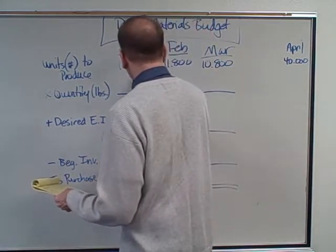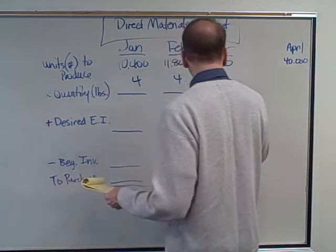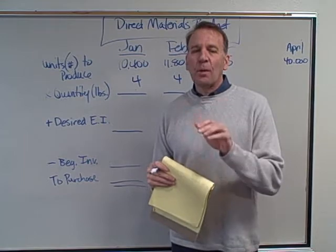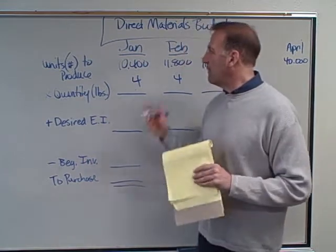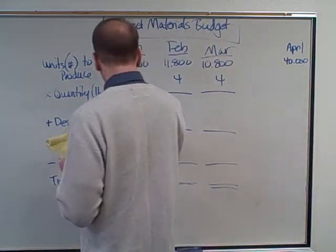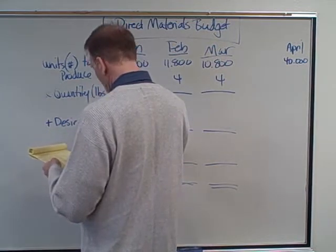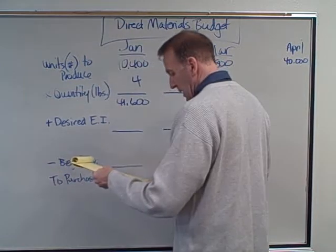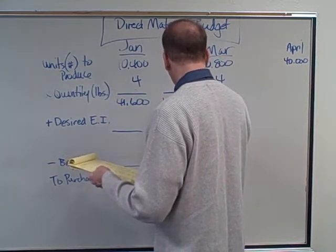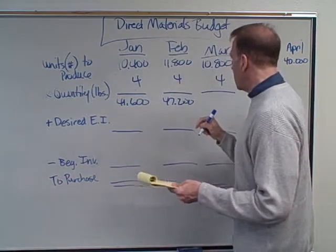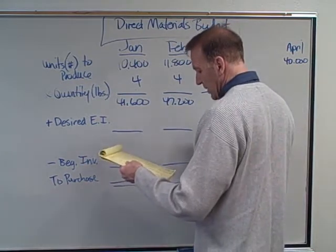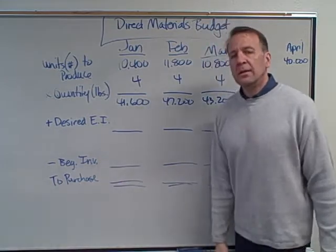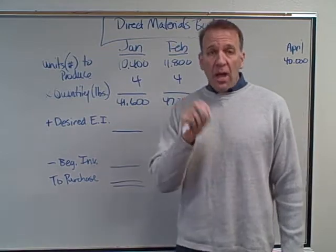We're using four pounds of tomatoes per case. So for January: 10,400 cases times four pounds gives us 41,600 pounds. For February: 11,800 times four gives us 47,200 pounds. And for March: 10,800 times four gives us 43,200 pounds.